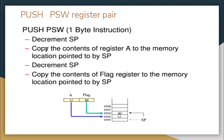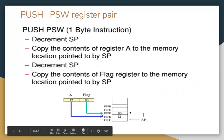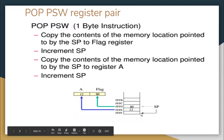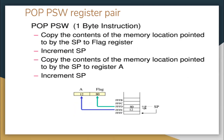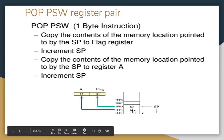PUSH PSW transfers the accumulator and the flag register to the stack. POP PSW pops the information and places it back in the accumulator and flag register respectively. It is also a one-byte instruction and works the same way as PUSH and POP for register pairs. The accumulator value is placed first, then the flag register. Stack pointer is decremented then data is placed; for POP it becomes an increment. The copy from the location pointed to by SP is placed in the flag register, then the next data is placed in the accumulator.